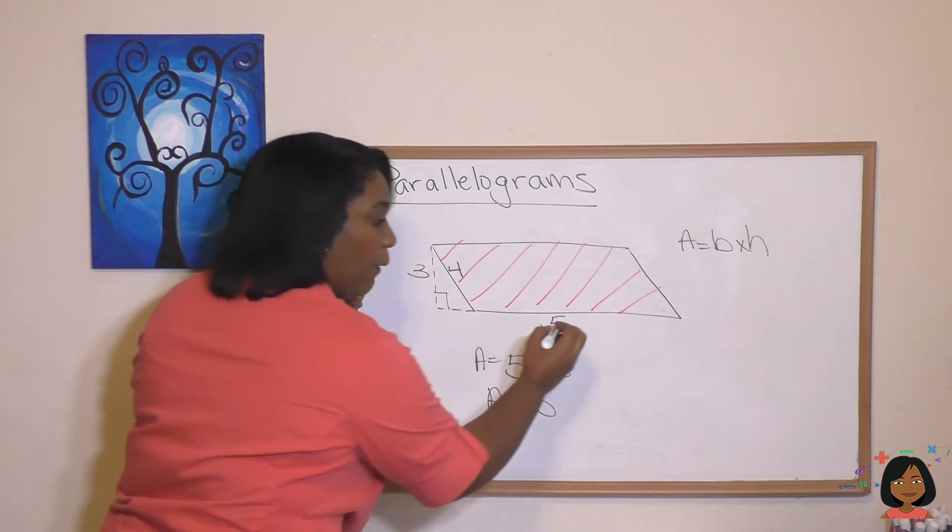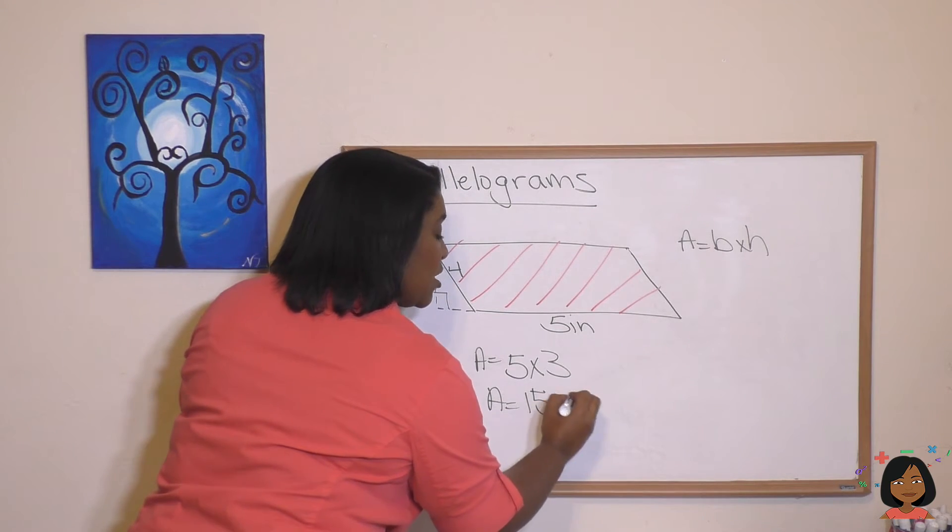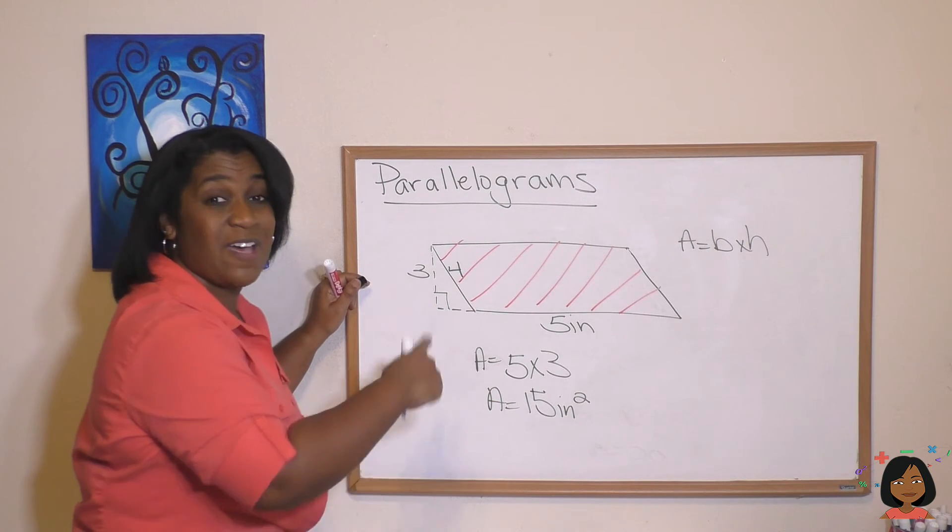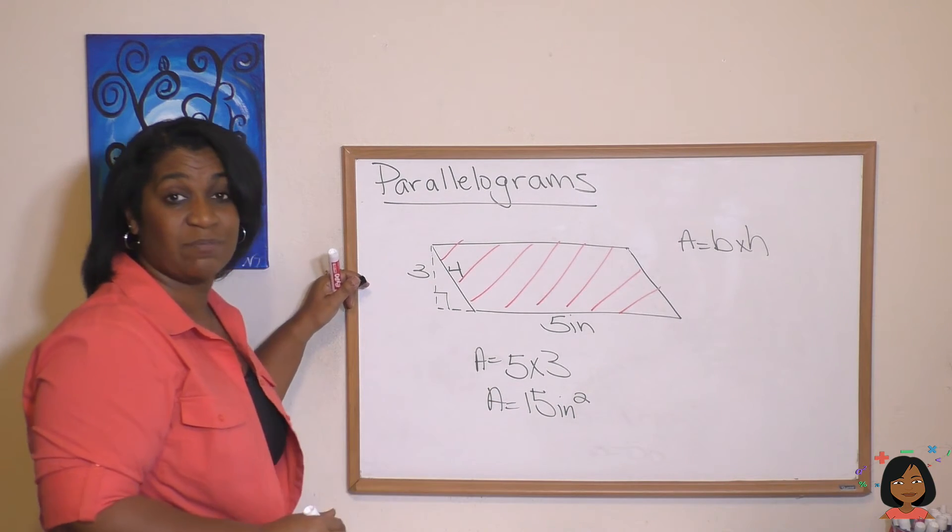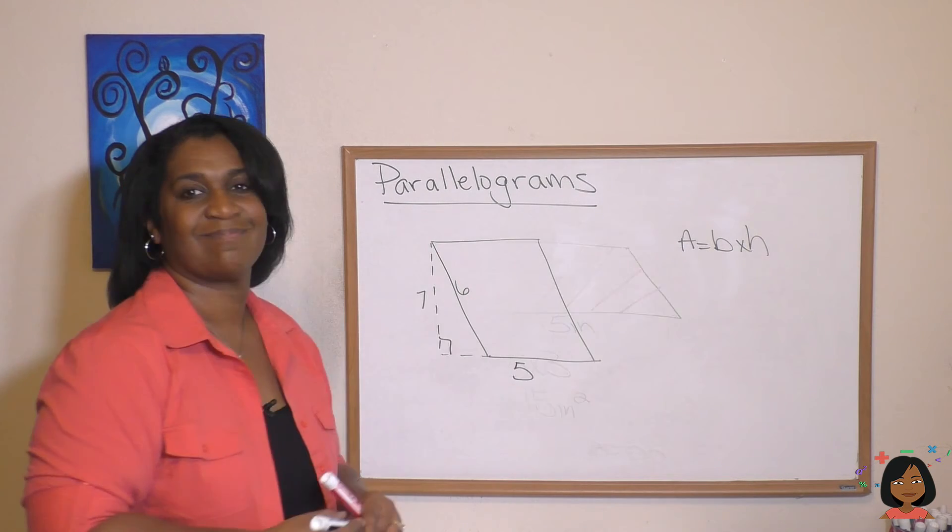Okay, so we're doing base times height. Our height is 3. Five times 3 means our area is 15. Now I forgot to give you a label here we go—inches. Okay, so it's going to be 15 inches, and our labels for area are always squared. There's my little 2: 15 inches squared.